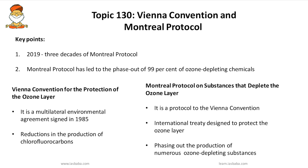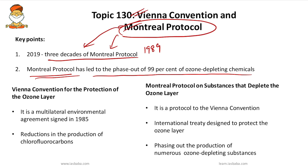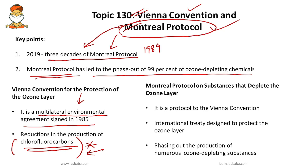The next crucial topic is the Vienna Convention and the Montreal Protocol. 2019 marks three decades of the Montreal Protocol, which was signed in 1987 and entered into force in 1989. The Montreal Protocol is considered a successful protocol as it has led to the phase-out of 99% of ozone-depleting chemicals. The Vienna Convention for the Protection of the Ozone Layer is a multilateral environmental agreement signed in 1985, which provided the framework for international reductions in the production of chlorofluorocarbons (CFCs).